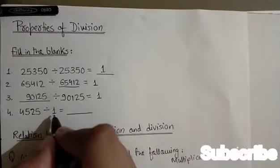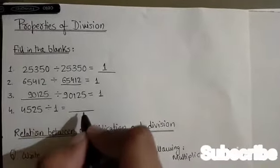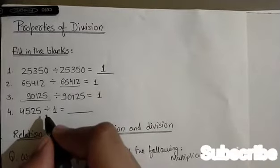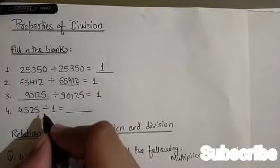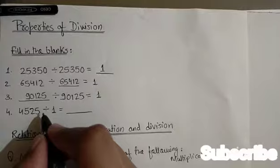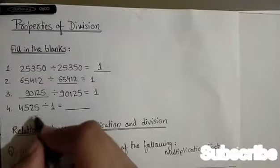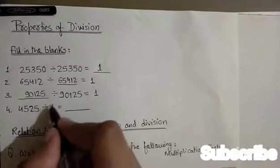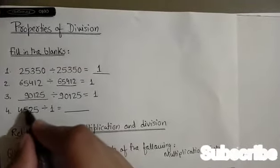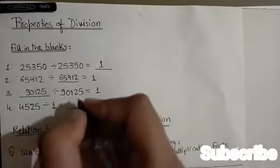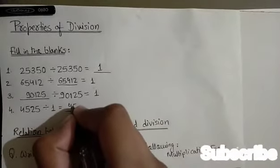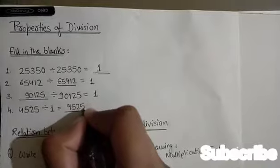45,525 divided by 1 equals blank. On dividing a non-zero number by 1, the quotient is the number itself. Jab bhi ham kisi non-zero number ko 1 se divide karte hai, tab hame quotient mein wahi non-zero number milta hai. So the quotient is 45,525.